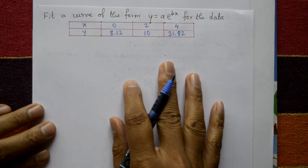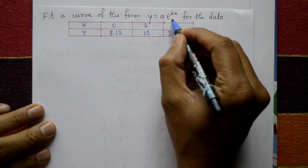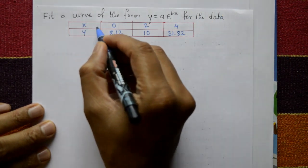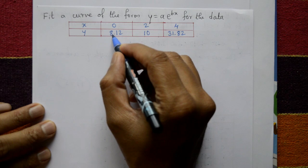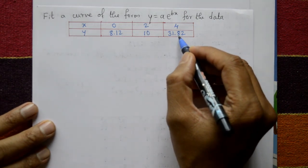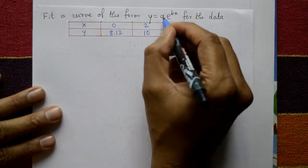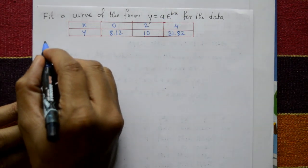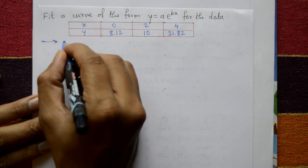Fit a curve of the form y = a·e^(bx) for the data: x is given as 0, 2, 4 and y is given as 8.12, 10, and 31.82. Find small a and small b. Solution: consider y = a·e^(bx).